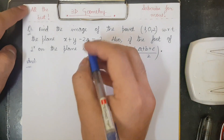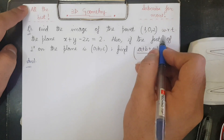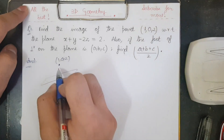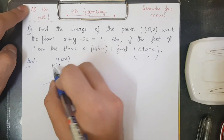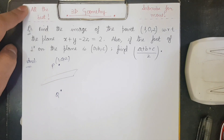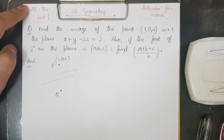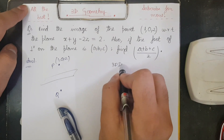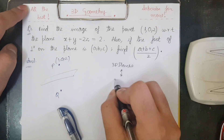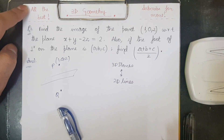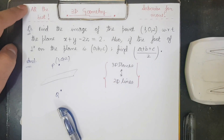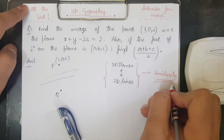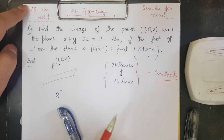First of all, we need to find the image of a point with respect to a plane. From a rough diagram, let's say the image of point P is some point Q. We also need to find the foot of the perpendicular. Now, you need to understand that 3D planes and the 2D lines we studied in coordinate geometry and the 3D planes studied in class 12 have a lot of similarity — not only in formulas but also in properties.